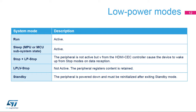The HDMI CEC peripheral is active in run and sleep modes. It is not active in stop modes, but interrupts from the HDMI CEC controller cause the device to wake up from stop modes on data reception, as this peripheral has a clock domain independent from the CPU clock. In standby mode, the peripheral is in power down and must be reinitialized after exiting standby.